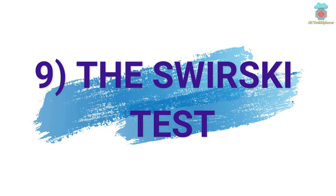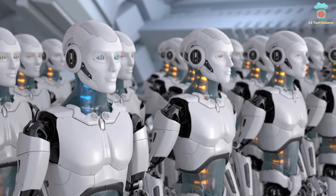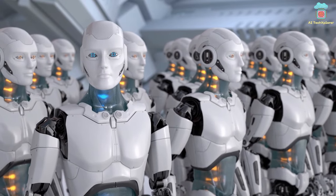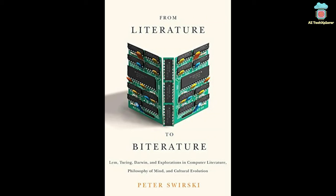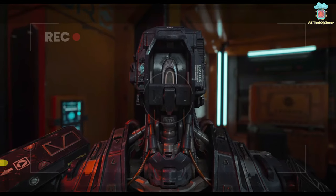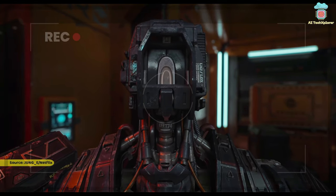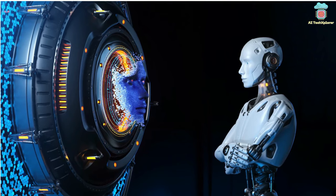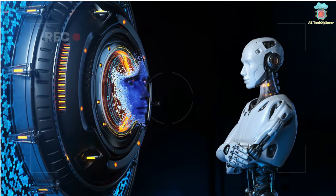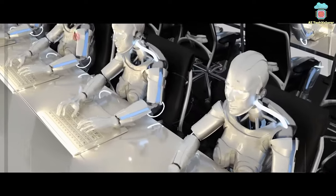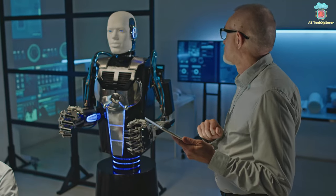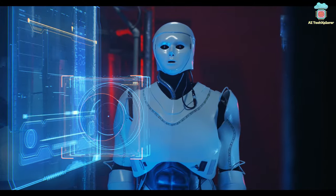Number 9: The Swirsky Test. The Swirsky Test is a reverse Turing test proposed by literary scholar Peter Swirsky in his 2000 book From Literature to Bitriture. While the Turing test evaluates a machine's ability to exhibit intelligent behavior indistinguishable from a human, the Swirsky test is a test of a machine's ability to identify whether it is interacting with a human or another machine.